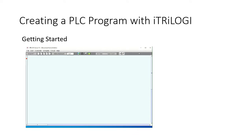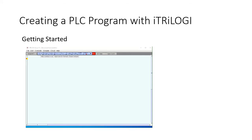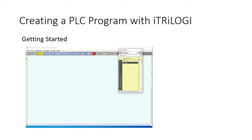A little trick to see the programming contacts and outputs: press the spacebar. Now you can see the various elements available for programming. To start, we want a normally open contact on the left, so we click on that contact. We want it to be an input, so we scroll to inputs and select 'start'.